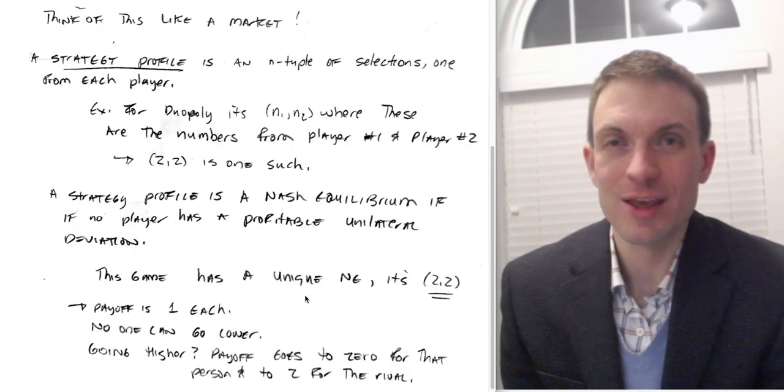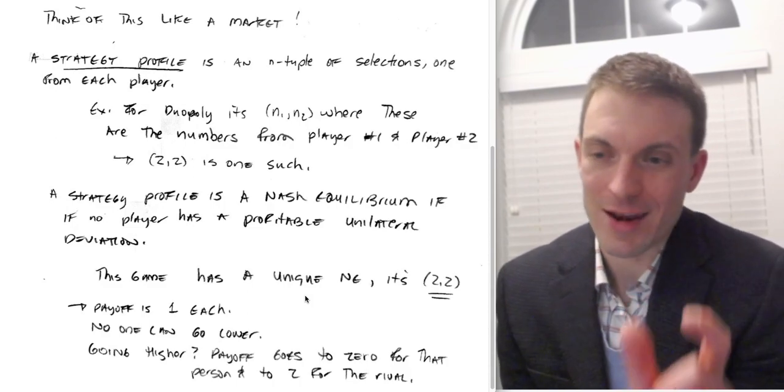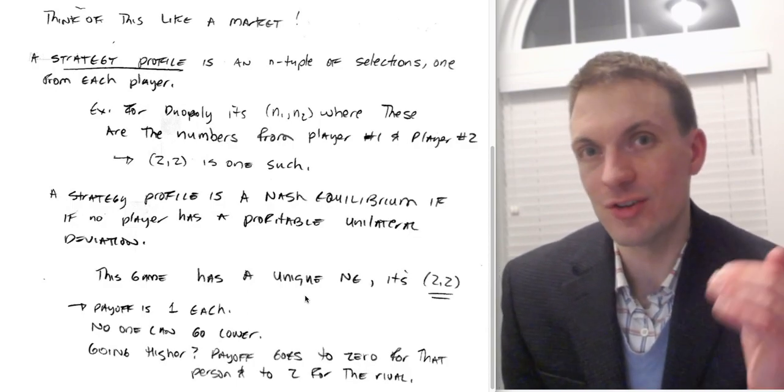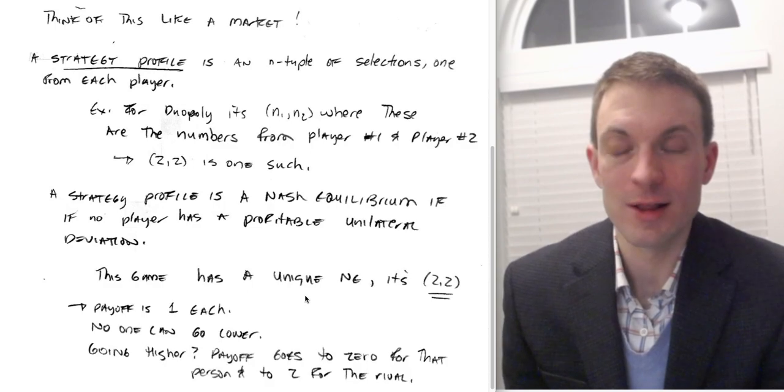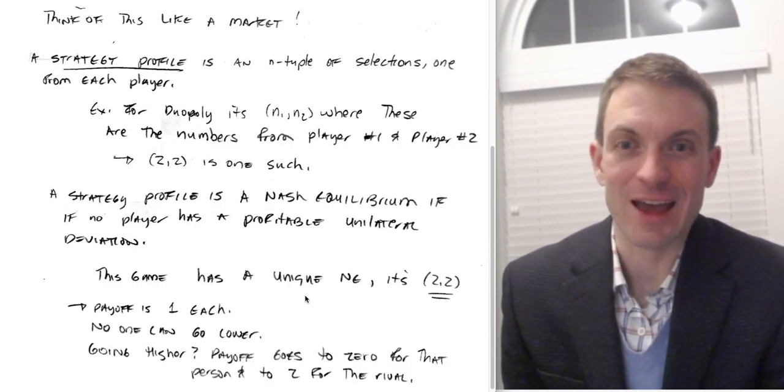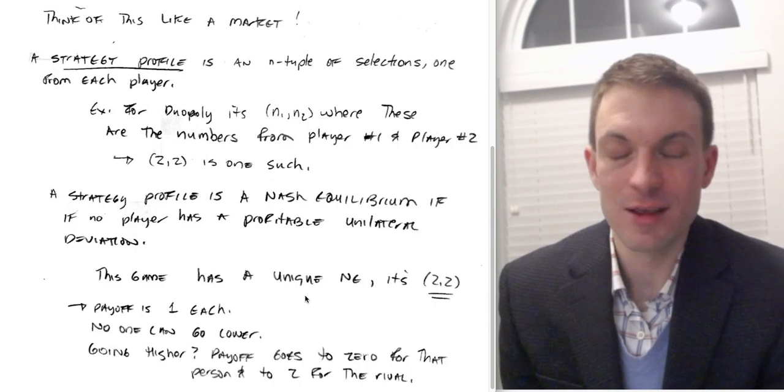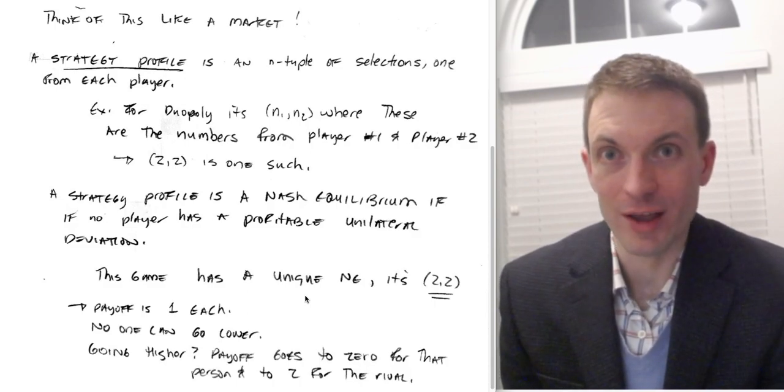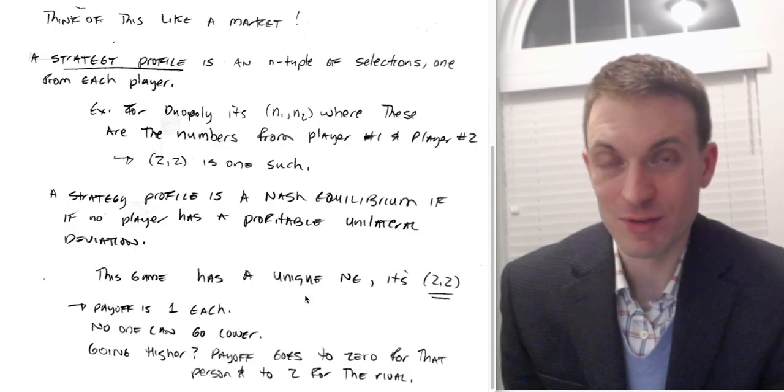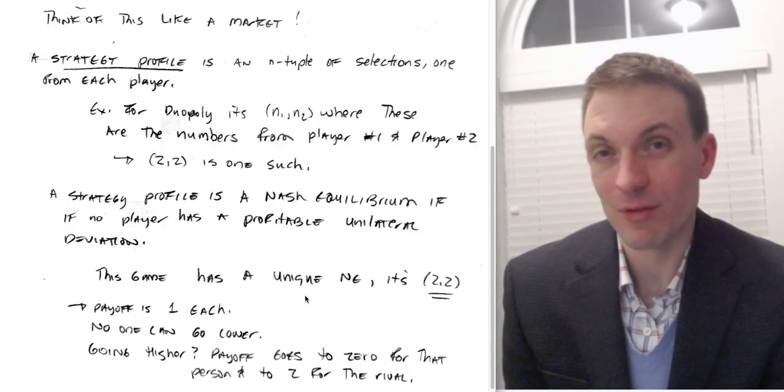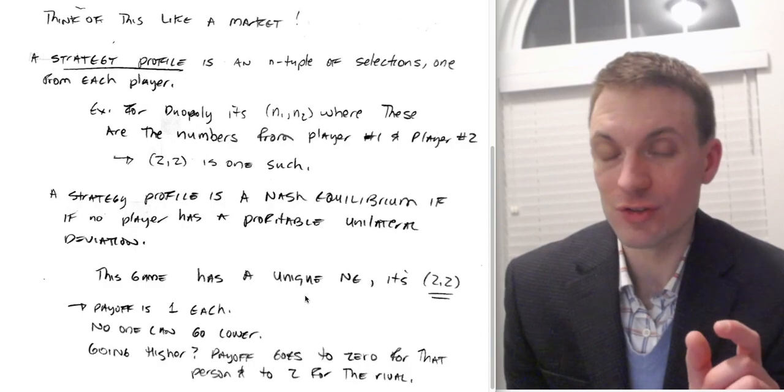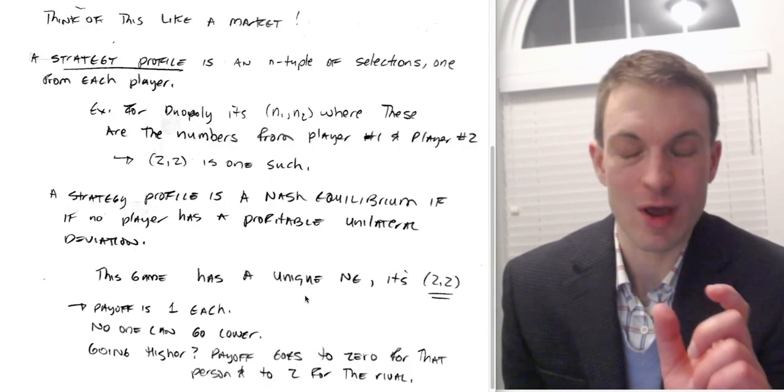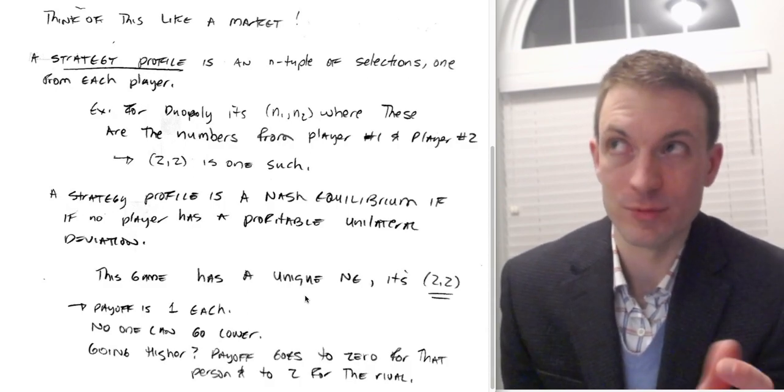Neither is 9-10. Because if you're at 9-10, that's our strategy profile. You selected 9 as your strategy. They selected 10 as their strategy. Does anybody want to change their strategy? Well, not you because you're getting 9, and that's the highest payoff in the game. But your rival does. They don't want to keep saying 10 because if they do that, their payoffs are 0. But if they select 8 while you continue to select 9, that's what we mean by a unilateral deviation, they would get a payoff of the strategy profile would be 8-9 or 9-8.